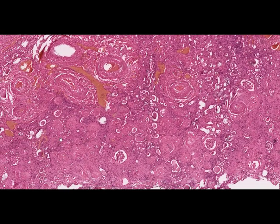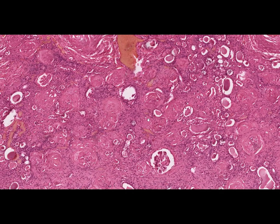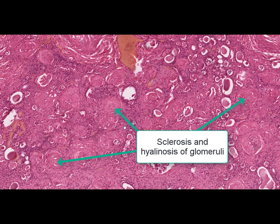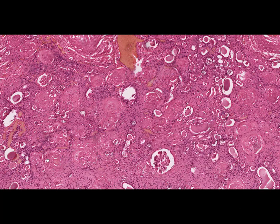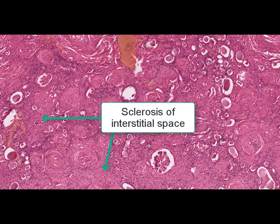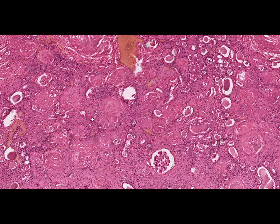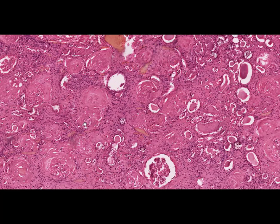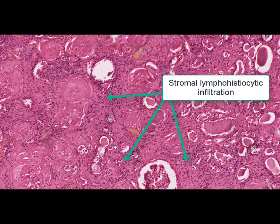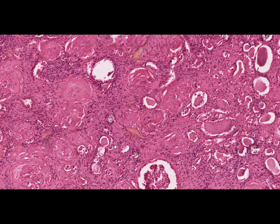It is important to mention that the changes can be observed not only in tubular-interstitial elements of the kidney but in glomeruli as well. However, the glomerular changes are considered secondary. Most of the glomeruli undergo sclerosis and some hyalinosis can be identified. The same changes are found in the walls of vessels and interstitial space. Diffuse lymphohistiocytic infiltration can also be seen in the interstitial tissue.